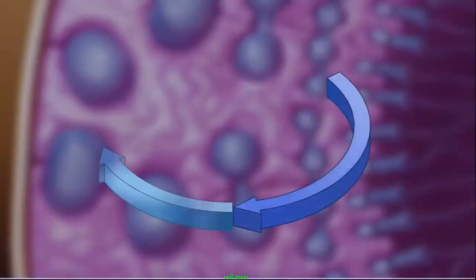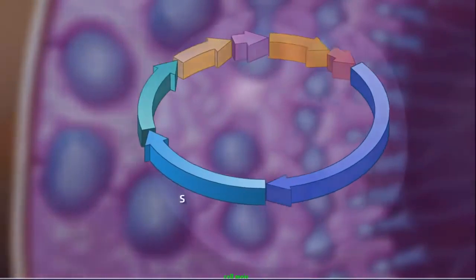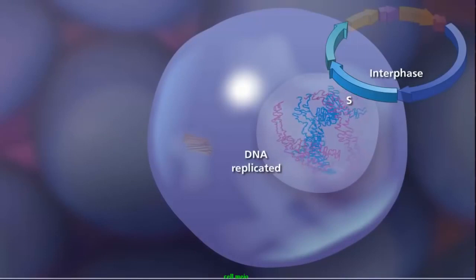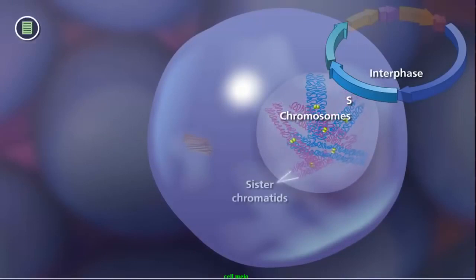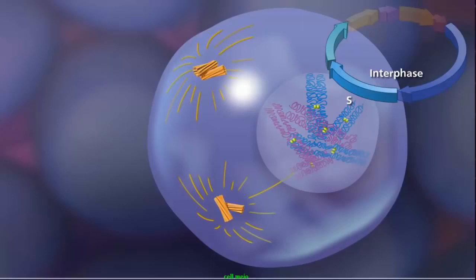As in mitosis, meiosis begins after a cell has successfully completed the G1, S, and G2 stages of interphase. During the S phase of interphase, the DNA is replicated, producing two copies of each chromosome called sister chromatids. The paired centrioles in the cytoplasm duplicate and begin extending microtubules that will form the meiotic spindle.